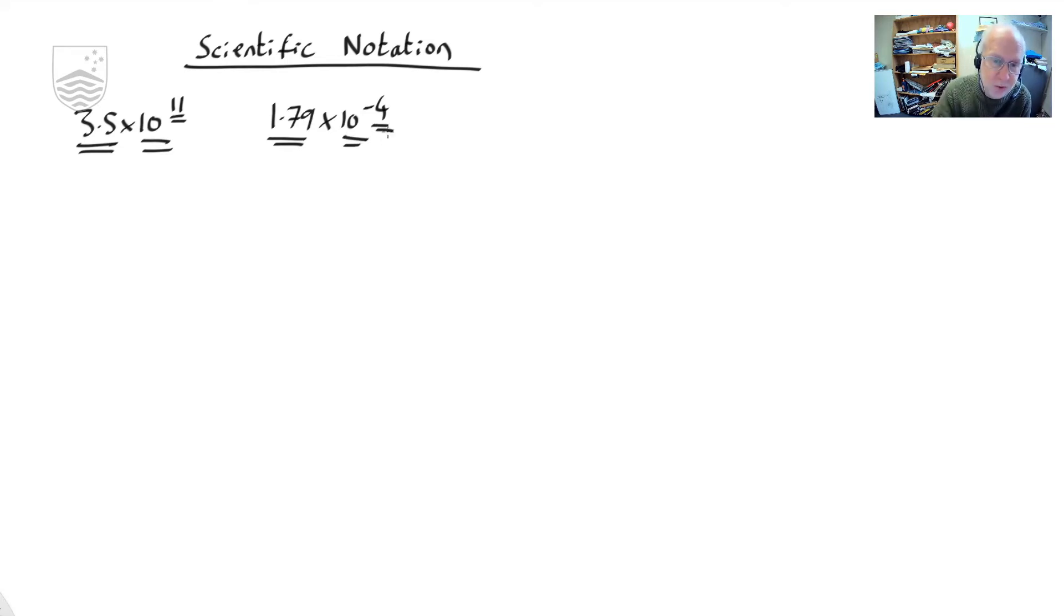Now a number in scientific notation looks something like this. So it might be 3.5 by 10 to the 11 or 1.79 times 10 to the minus 4. So it's always some number times 10 to some power. So let's look at the powers of 10 first. So 10 to the 0 is 1. 10 to the 1 equals 10. 10 to the 2 equals 100. 10 to the 3 equals 1000 and so on. So the index power to 10 to the 3 so that would be 3 gives you the number of 0s. So 10 to the 2 is 1 followed by 2 0s. 10 to the 1 is 1 followed by 1 0. 10 to the 0 is 1 followed by 0 0s. If you have minus indexes so 10 to the minus 1 is 0.1, 10 to the minus 2 is 0.01, 10 to the minus 3 is 0.001 and so on.